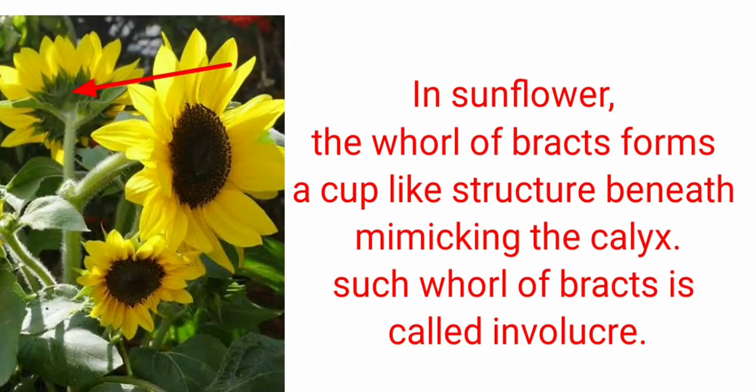Here in sunflower the whorl of bract forms a cup like structure that mimics like a calyx. Here the bract combined together and forms a circle and forms a cup like structure that mimics like a calyx but it is actually not a calyx. It is a bract. And this kind of arrangement of bract is called as involucre.